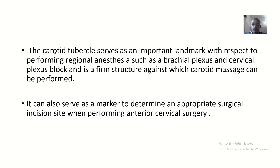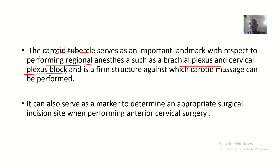The carotid tubercle serves as an important landmark for performing regional anesthesia, such as the brachial plexus and cervical plexus block. If you want to access certain vertebrae and perform anesthesia, you can locate the C6 tubercle and count down from there. It is also a firm structure against which carotid massage can be performed around the tubercle.